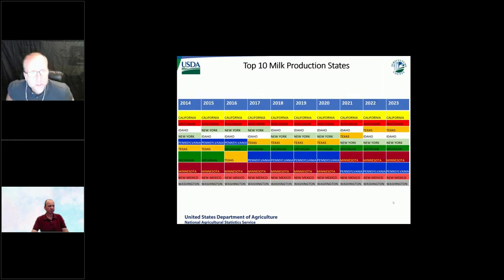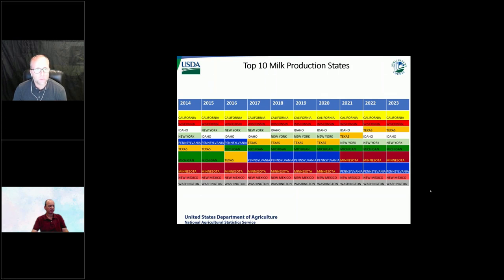The top 10 producing states for milk production have remained the same states, however rankings have altered over time. California takes the top two. There's been a little more variation in rankings three through eight, and New Mexico and Washington have rounded up the top 10.